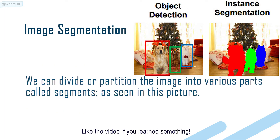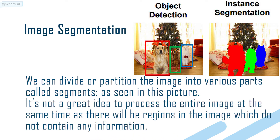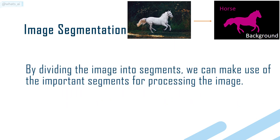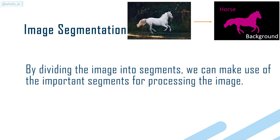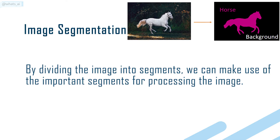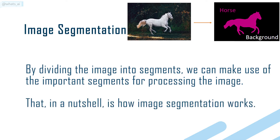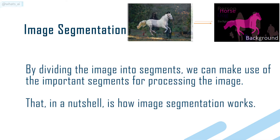We can divide or partition the image into various parts called segments, as seen in this picture. It's not a great idea to process the entire image at the same time, as there will be regions in the image which do not contain any information. By dividing the image into segments, we can make use of the important segments for processing the image. That, in a nutshell, is how image segmentation works.